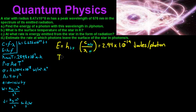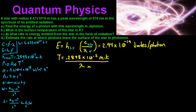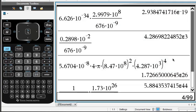So T equals 0.2898 times 10 to the negative 2 meter-kelvins, divided by our wavelength in meters. That cancels out and you're left with Kelvin. When you do that: 0.2898 times 10 to the negative 2, divided by our wavelength which is 676 times 10 to the negative 9, gives us 4.287 times 10 to the 3rd, or roughly 4300 Kelvin.